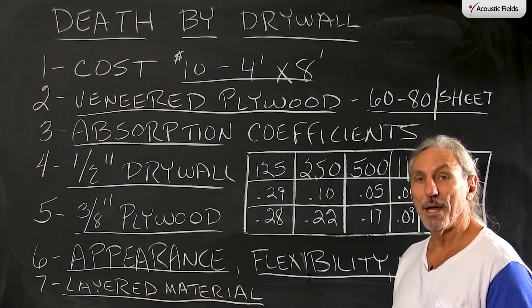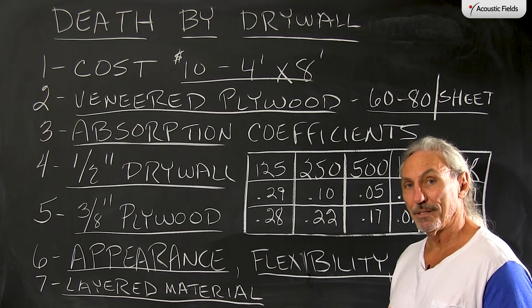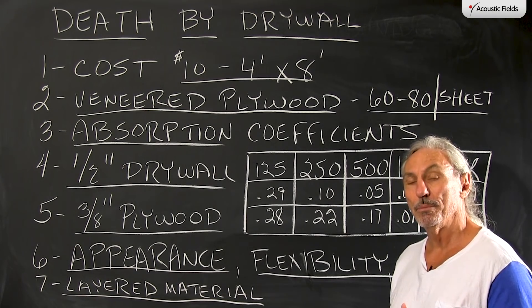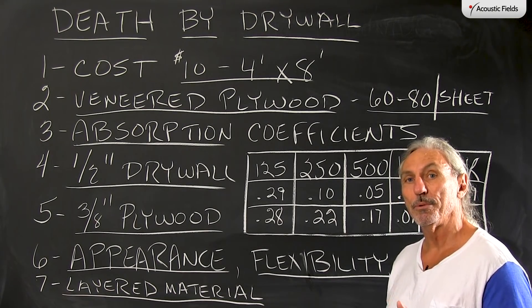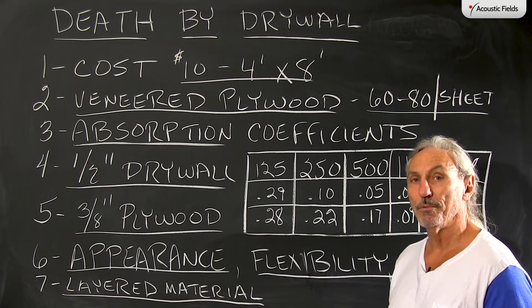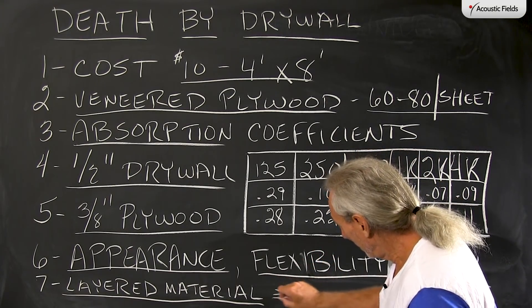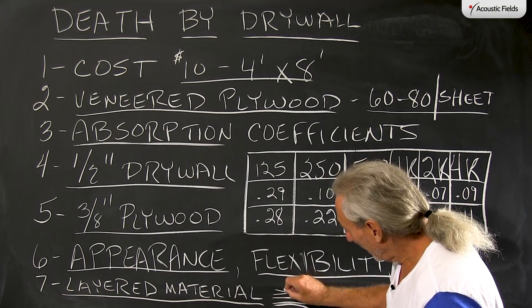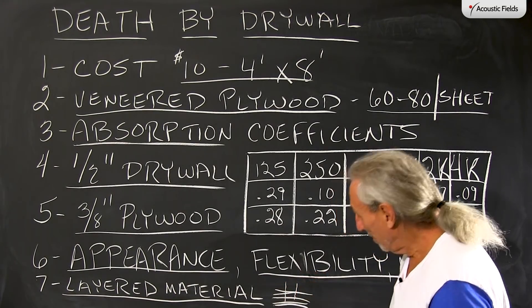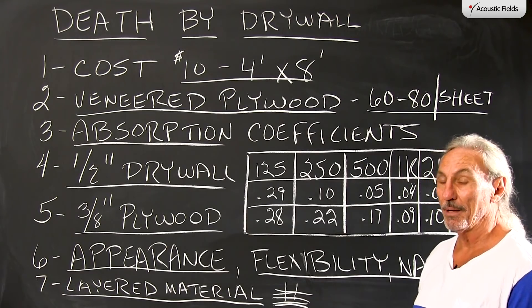We know from our examples that we want the room to move less. Well, if we want the room to move less, we build the room with materials that take out that kind of energy that causes the room to move. So a series of layers with plywood, we get an energy sink built into the product. We don't get that with drywall and the absorption coefficients are about the same.